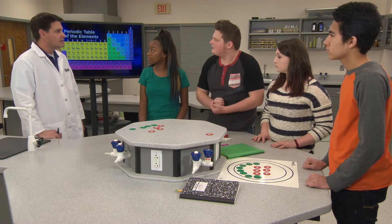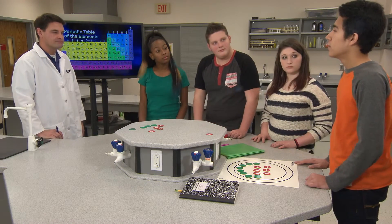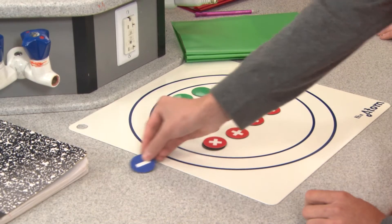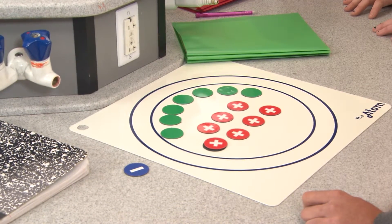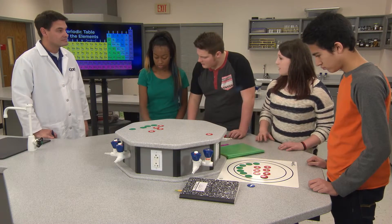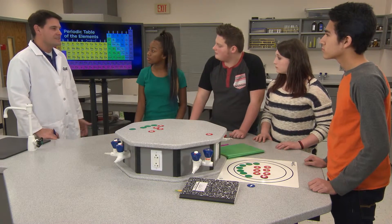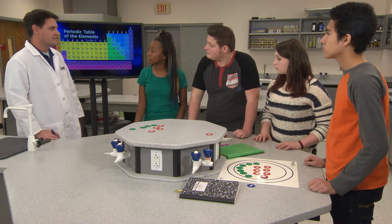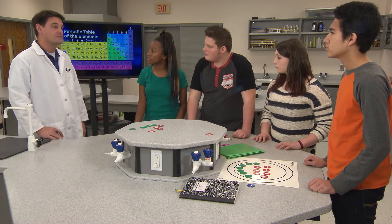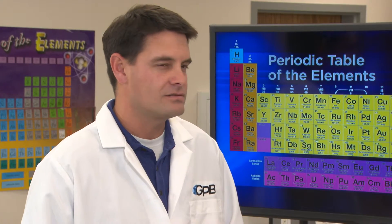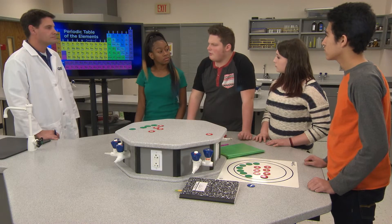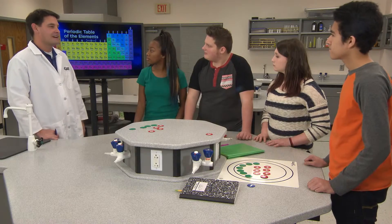Now try to show what happens when carbon-14 undergoes beta decay. A beta particle is emitted when a neutron suddenly changes into a proton, and then the beta particle — the electron — is released. Count the protons and neutrons in the new nucleus: we now have seven protons, and since one neutron changed into a proton, we only have seven neutrons. The law of conservation of matter reminds us that mass and matter cannot be created or destroyed, so the total mass of reactants and products in the nuclear equation stays the same.